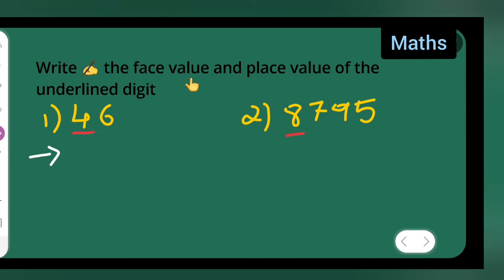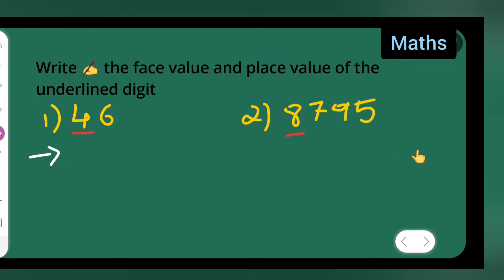Let us write the face value and place value of the underlined digit. The first question is 46 — we underline this four. We have to write the face value and place value of this four.